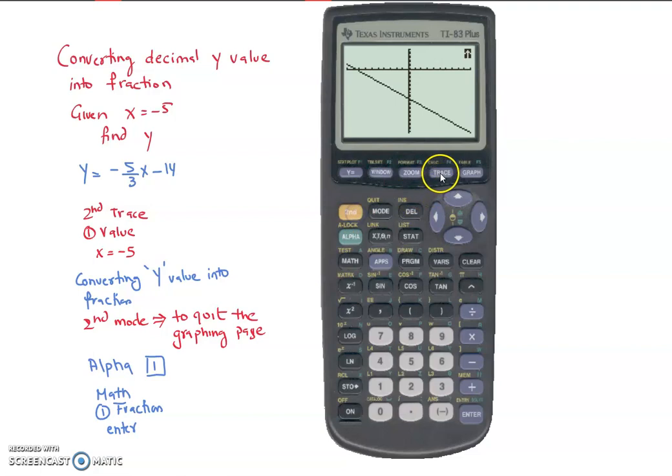so I would go second, trace, option number 1. Negative 5 for x, and enter. So you get this y value, which is negative 5.6666 repeated.